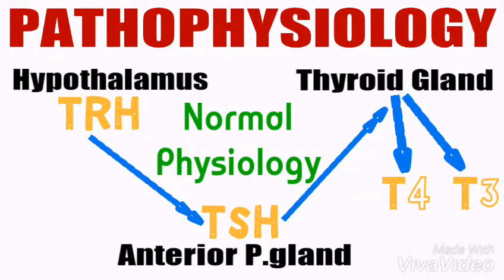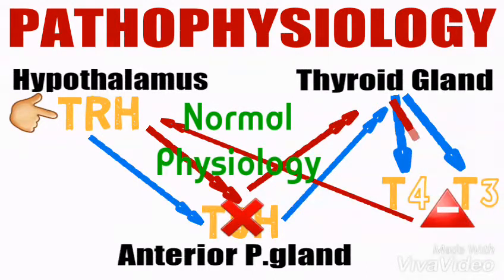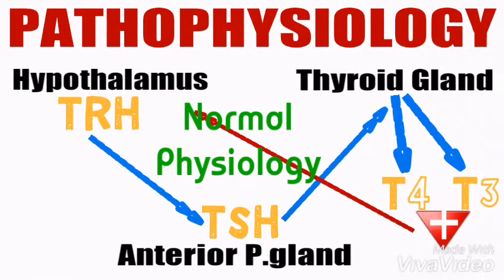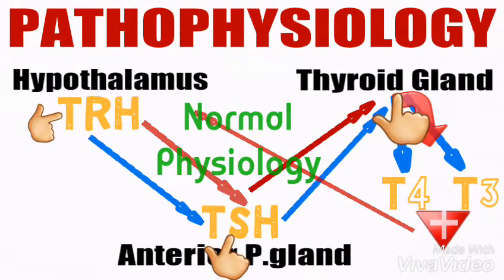And triiodothyronine (T3). When there are high levels of T3 and T4 in the bloodstream, a feedback signal will be sent to the hypothalamus, which will inhibit thyroid-stimulating hormone, and there will be no further production of T3 and T4. Again, when there are low levels of T3 and T4, a positive feedback will be sent to the hypothalamus to start releasing thyrotropin-releasing hormone, and thyroid-stimulating hormone will be stimulated from the anterior pituitary gland, which will further cause the production of T3 and T4 from the thyroid gland.